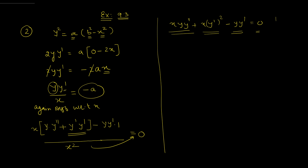This is the required differential equation. As you can see, there are no arbitrary constants in this equation. In this way, you can form a differential equation for any curve — first count the arbitrary constants, differentiate that many times, and eliminate the arbitrary constants.